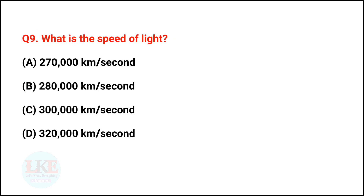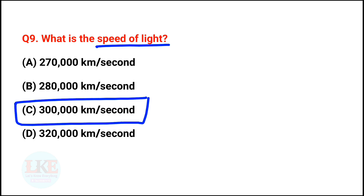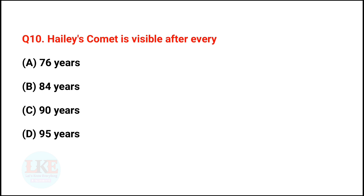Question 9: what is the speed of light? The right answer is option C — 300,000 km per second. Question number 10: Halley's comet is visible after every 76 years.